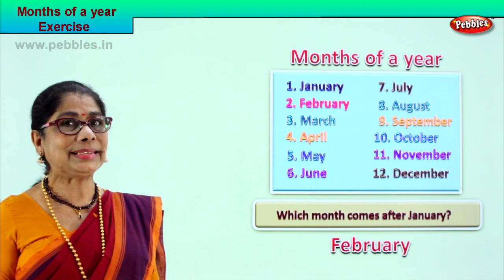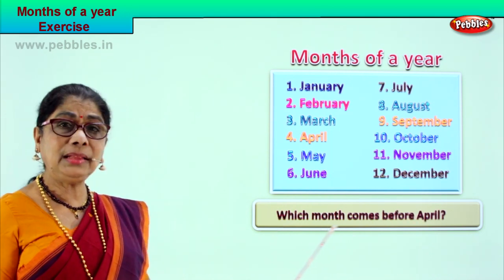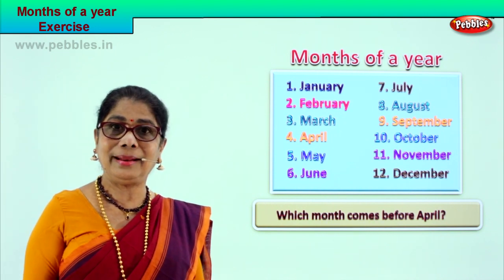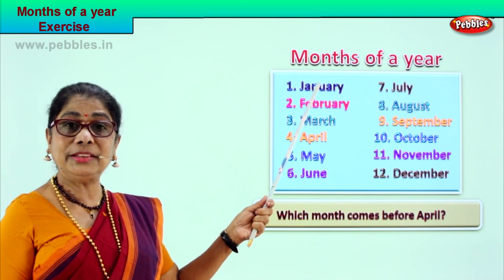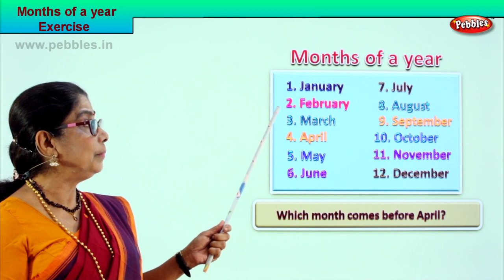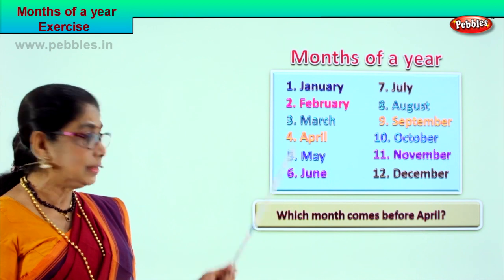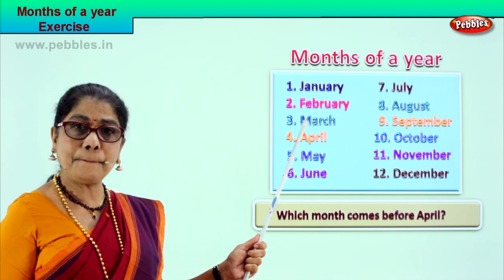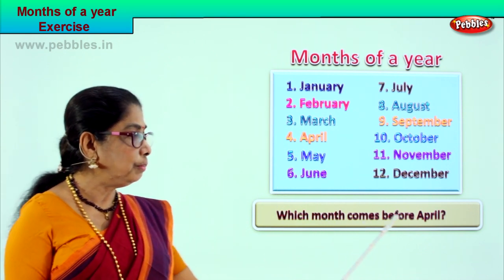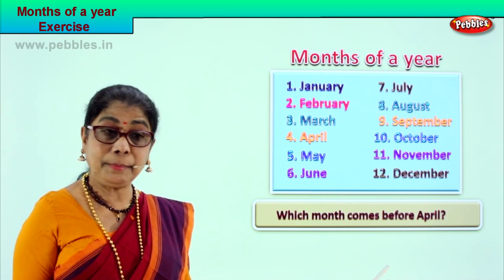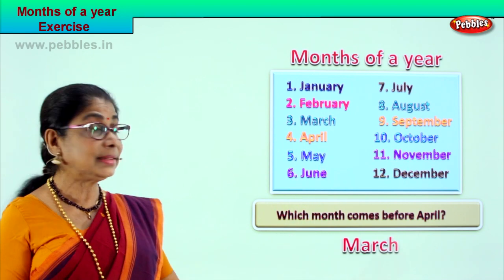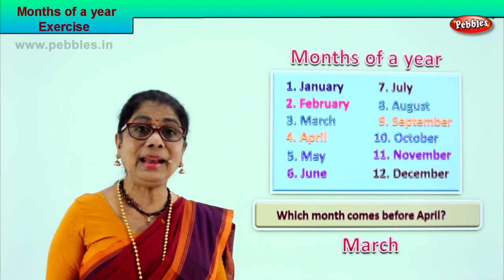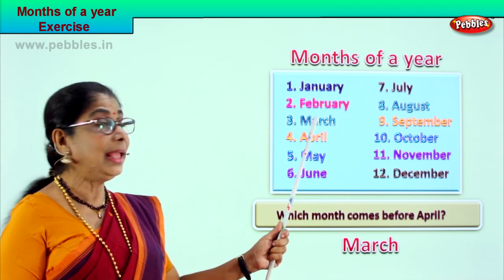Let's take another question: Which month comes before April? Let's look — the first month is January, next is February, then comes March, then comes April. The question is which month comes before April? March. The month of March comes before April. Spell March: M-A-R-C-H. Which month comes before April? March comes before April.